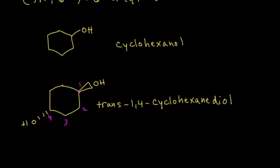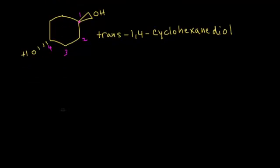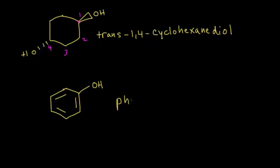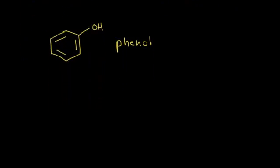Other types of alcohols: instead of a cyclohexane ring, we could have an alcohol based off a benzene ring. With pi bonds in the ring and an OH attached, this is a special type of alcohol called a phenol. You'll see this hydroxybenzene portion in many natural products, so phenol is a very important molecule to recognize.